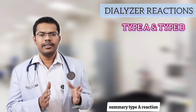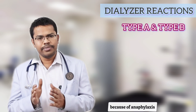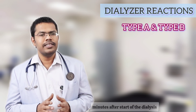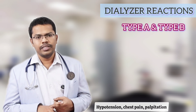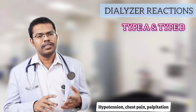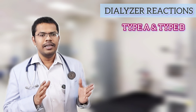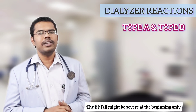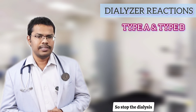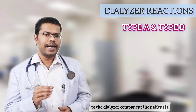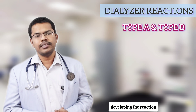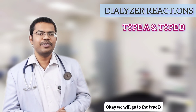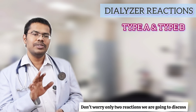Summary of Type A reaction: it is anaphylactic in nature, occurs within the initial minutes of the start of dialysis. Symptoms include hypotension, chest pain, palpitation — a dramatic response from the patient, with a severe BP fall at the beginning. Stop the dialysis at the initial 10-minute mark. The reaction is due to the dialyzer components. That covers Type A.